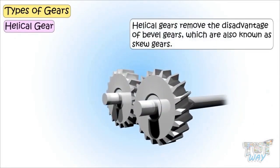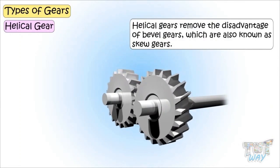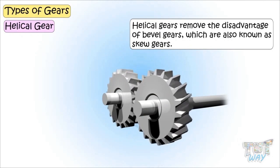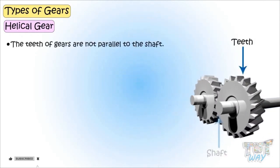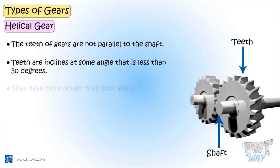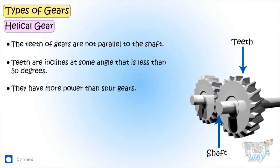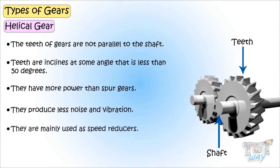Next is the helical gear, also called skew gears. In helical gears, the teeth are not parallel to the shaft — they are inclined at some angle, which is less than 50 degrees. Helical gears have more power than spur gears, and they produce less noise and vibration. Their main function is to reduce speed.